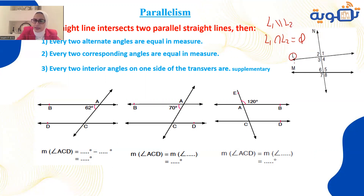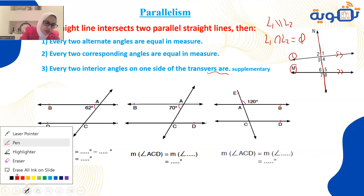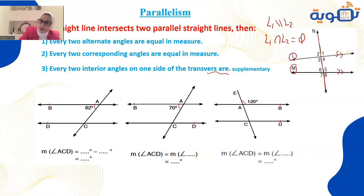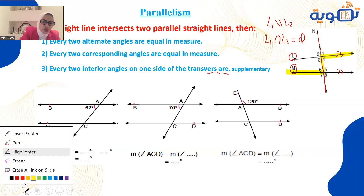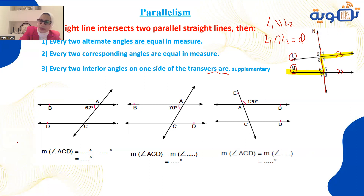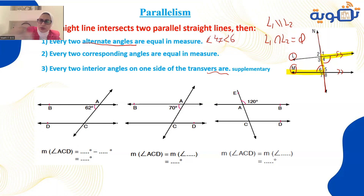If I have line L and line M parallel, and N is a transversal cutting both — letter Z is formed, meaning angle 4 equals angle 6 because they are alternate angles. So angle 4 and angle 6 are equal to each other.